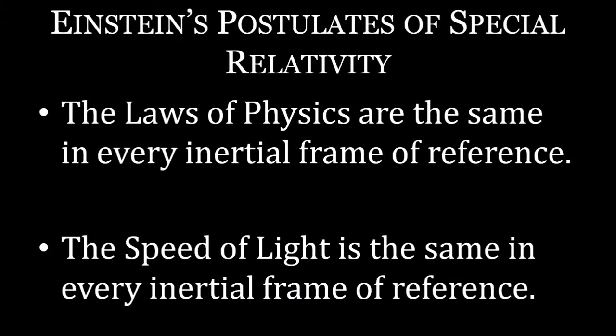However, the light always took the same time to travel down both arms. There was no ether wind, which led Einstein to introduce his radical second postulate, which has some interesting consequences.